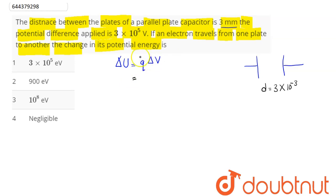Now we have here the charge value. Distance is given, potential difference is given, and here it says the electron is being moved. So charge on an electron is 1.6 into 10 power minus 19 coulomb into potential difference here is 3 into 10 power 5 volt.